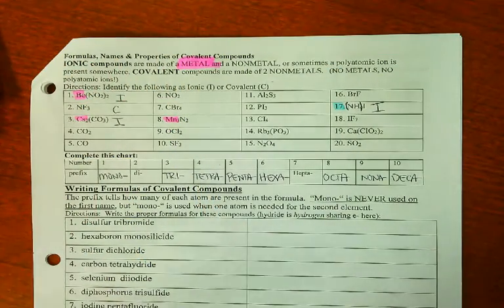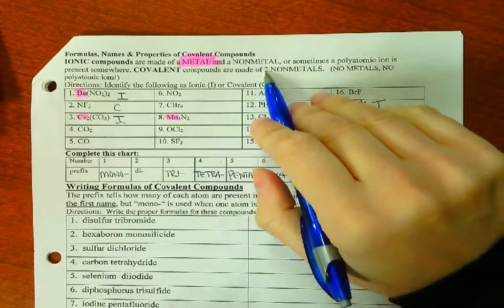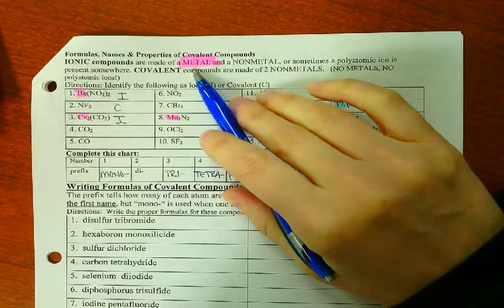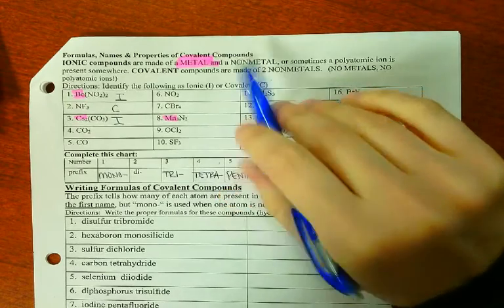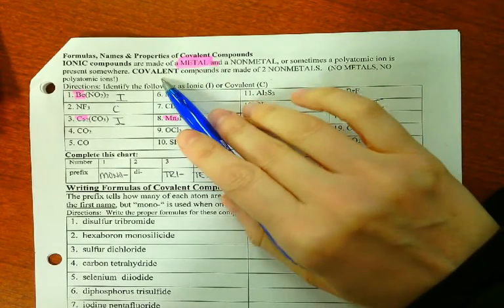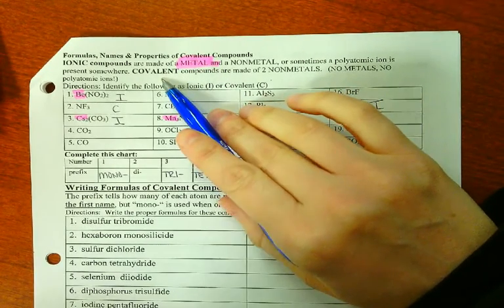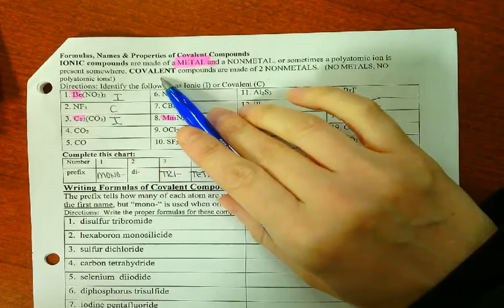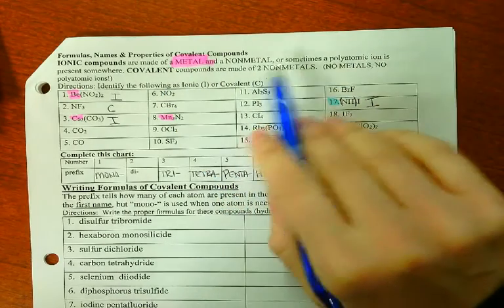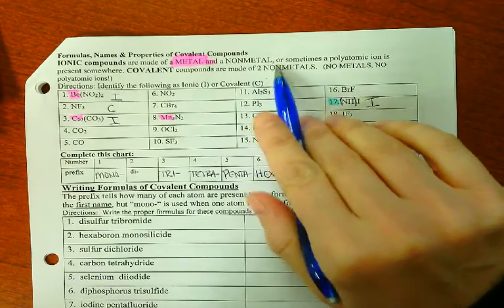Ionic compounds are made of both a metal and a non-metal. This could be three metals and one non-metal, or one metal and three non-metals. But if there is a metal in it, it is an ionic compound. Covalent compounds cooperate to share electrons if there are only non-metals in it. No metals and no polyatomic ions.